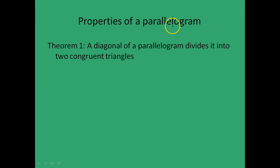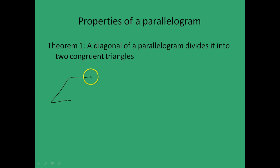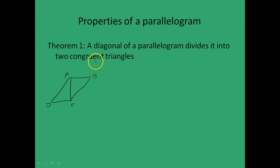Now let's start looking at the properties of parallelograms. The first theorem states: a diagonal of a parallelogram divides it into two congruent triangles. Let's draw a parallelogram and name it ABCD. If we join diagonal AC, we have to prove that the two resulting triangles are congruent.